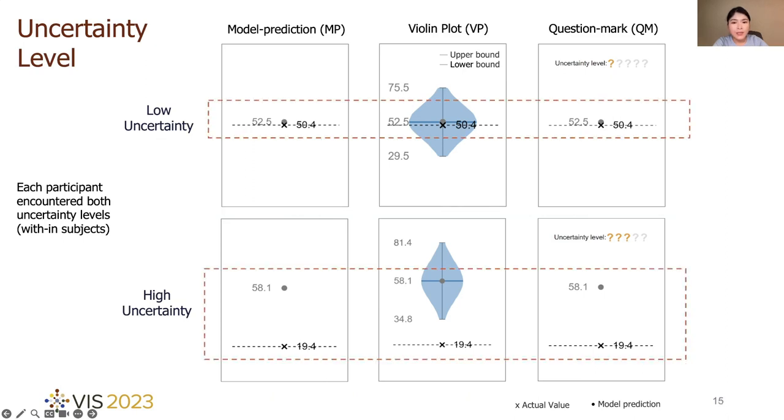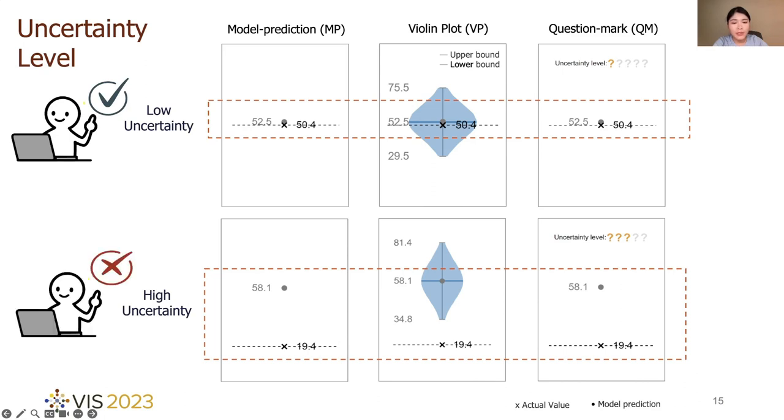In our study, the model we built was expected to perform better than a human, and the low uncertainty typically indicates that model performed very well. Also, we deliberately select prediction tasks according to the level of uncertainty for the study. Thus, optimal decisions for participants should be to adopt model prediction when encountered a low model uncertainty task, while reject model predictions in a high model uncertainty task.